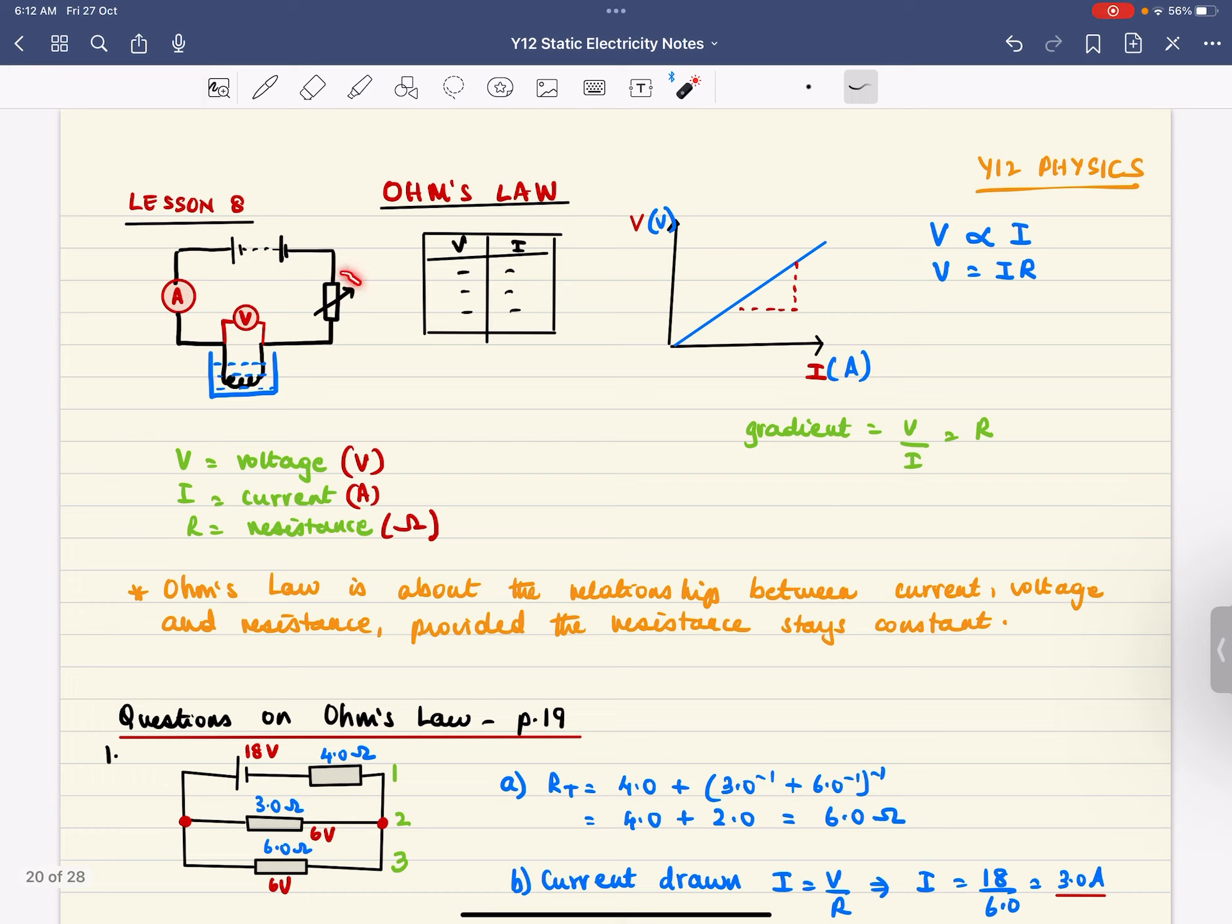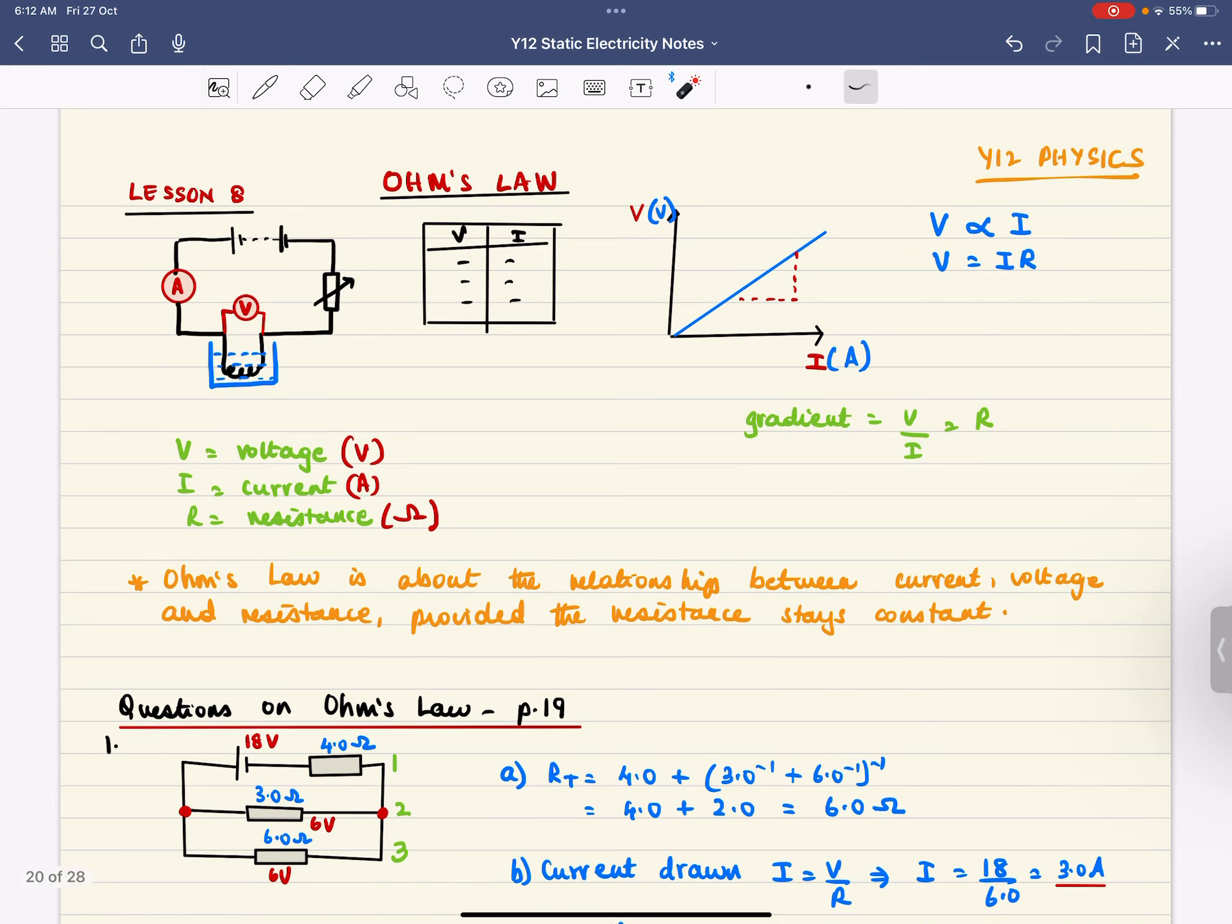Now why do we have this variable resistor? That is to change the size of the current through the circuit. And what did we do? We took two measurements. We measured the voltage across this coil, this resistance coil that's dipped in water, and we also measured the voltage for changing currents.